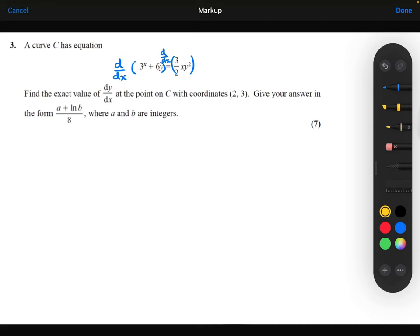So let's do this then. Let's first of all differentiate 3^x. 3^x, when I differentiate that, will give me 3^x·ln 3.